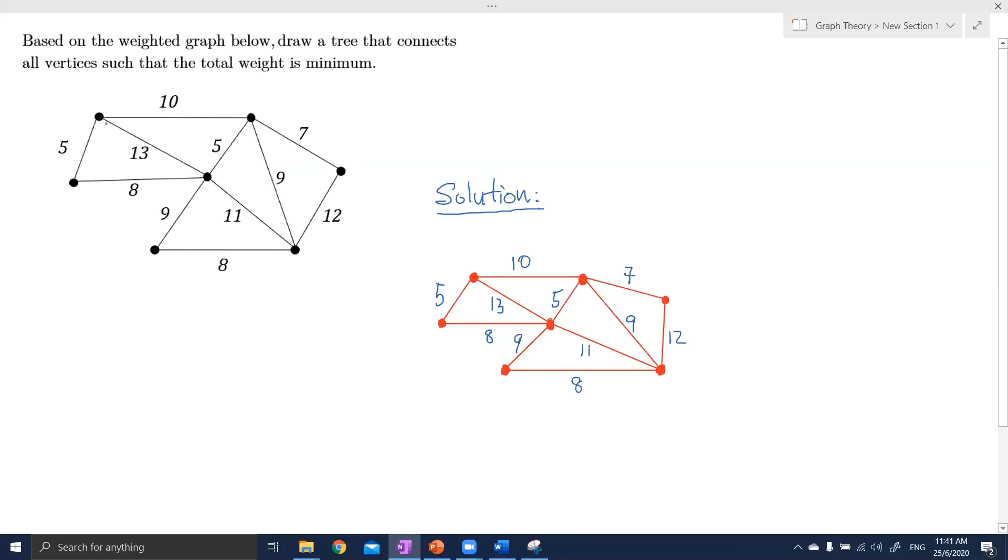Before we start, first we need to know what is a cycle. A cycle is a closed path where if you start from any one of the vertex, you will be able to travel around the edges and then go back to your original position. So let's say if we start from this vertex, you can travel around the edges and go back to our original position which is our initial vertex. So this is a cycle.